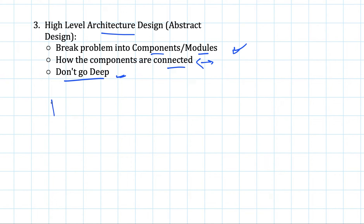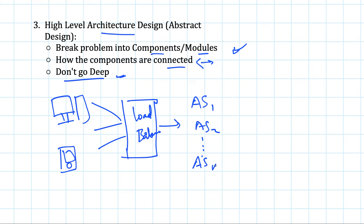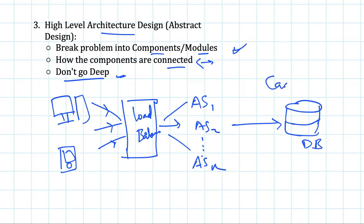A good starting point would be to draw the UI side, the user side — one web client and one mobile client. Then we have a load balancer distributing the load to different application servers, and these servers are communicating with the databases. We also have some caching mechanism or file storage. This kind of high level design is a good starting point after you have understood the problem well.